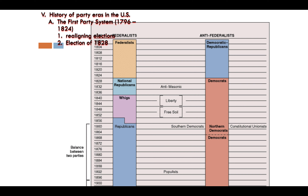The election of 1824 got really ugly. John Quincy Adams and Andrew Jackson were hurling insults and mudslinging. Adams even trash-talked Andrew Jackson's wife and their marriage. Jackson's wife had been married before, and her divorce papers somehow never got finalized at the courthouse — so technically she was still married to her first husband when she married Andrew Jackson. Adams not only commented on Jackson's wife but their children, implying heavily that they were illegitimate. That would have infuriated Andrew Jackson.